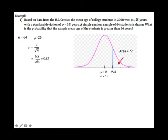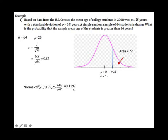Given x, we want to find the area to the right, so we use normalcdf starting from 26 to the upper value of 1E99, then state the mean 25 and the standard deviation. You should find the answer is 0.1197. Note: even though we found the standard deviation is 0.85, when using the calculator it is better to put the whole formula rather than just 0.85, otherwise your final answer may be off.